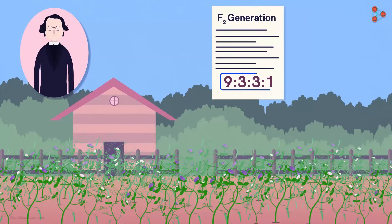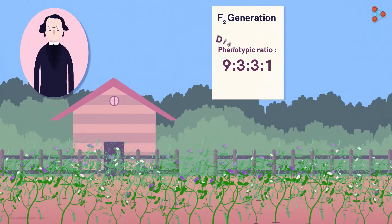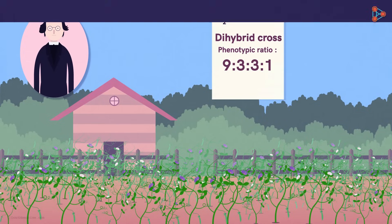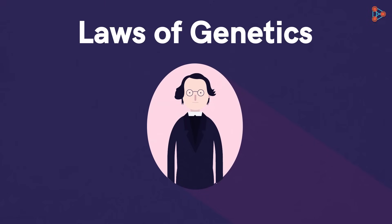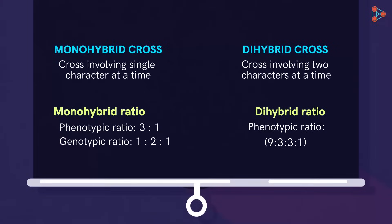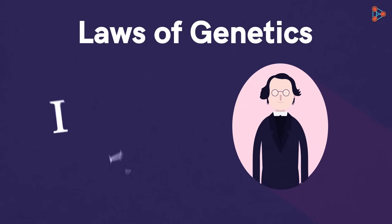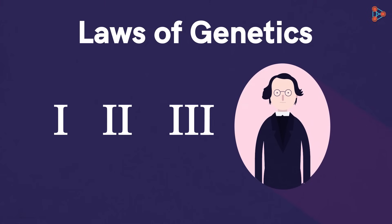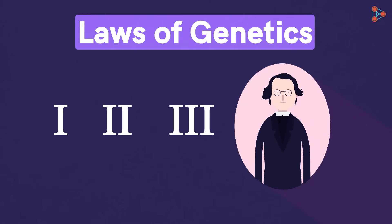So 9 to 3 to 3 to 1 is the phenotypic ratio for a dihybrid cross. Before we get deeper into experiments, let's have a look at the laws put forth by Mendel. Based on the observations of monohybrid and dihybrid crosses, Mendel established three extremely important laws in genetics. Let's have a look at them in the next part!